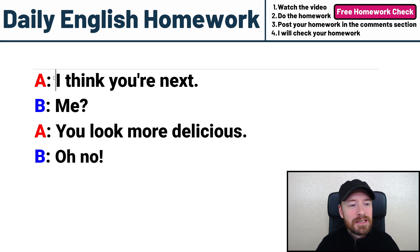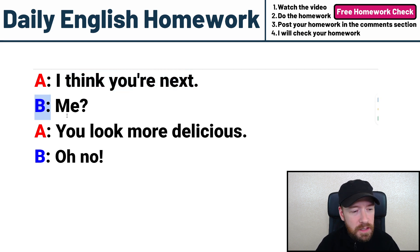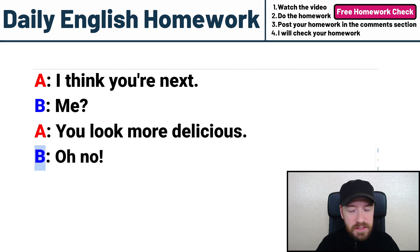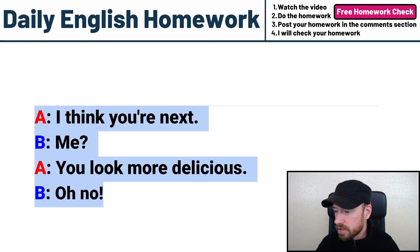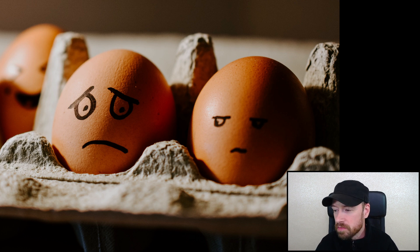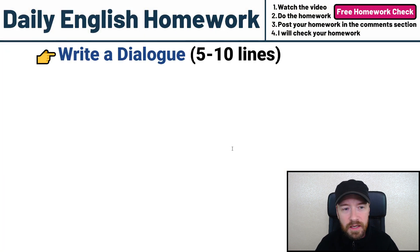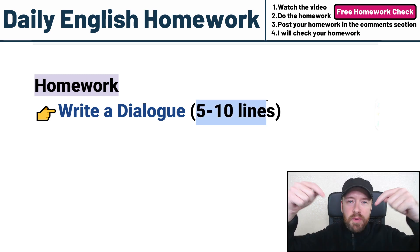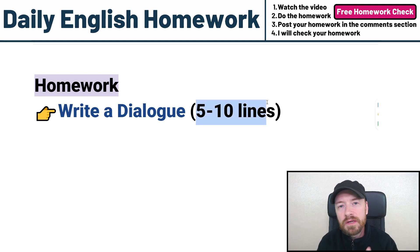A says: I think you're next. B says: Me? A says: You look more delicious. B says: Oh no! Okay, so that's my quick dialogue for this photo. I want you to write your own dialogue about what's happening in this photo — I think it'll be interesting and fun. Five to ten lines, write your dialogue, post it in the comments below and I'll check it. That's your homework, please do it.